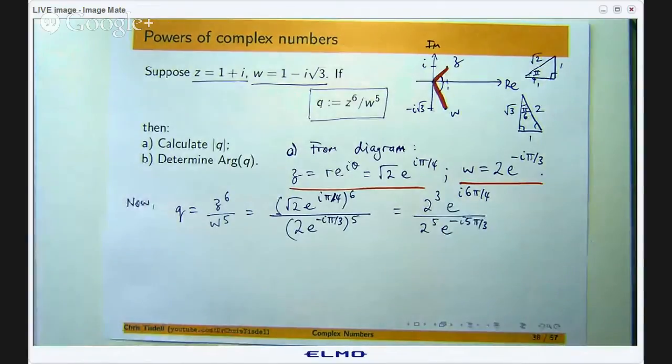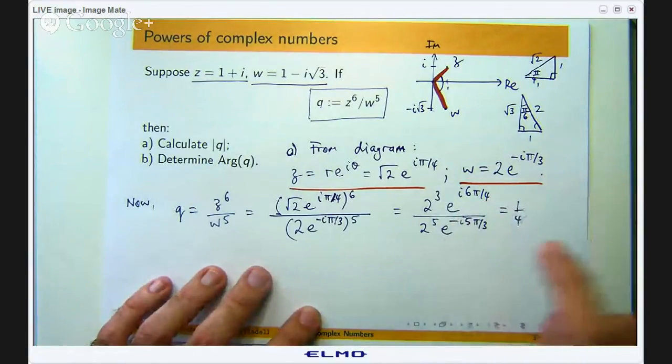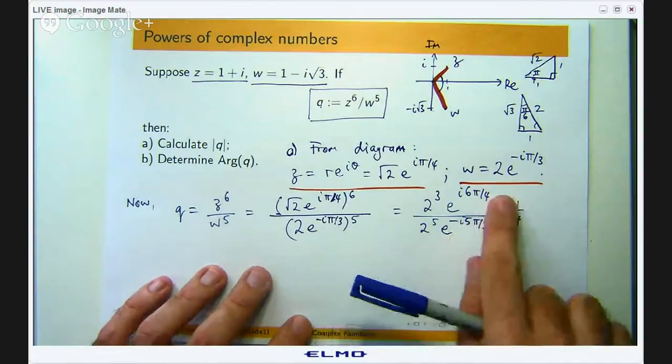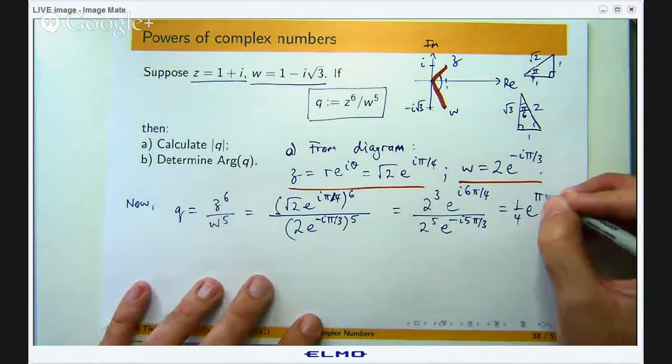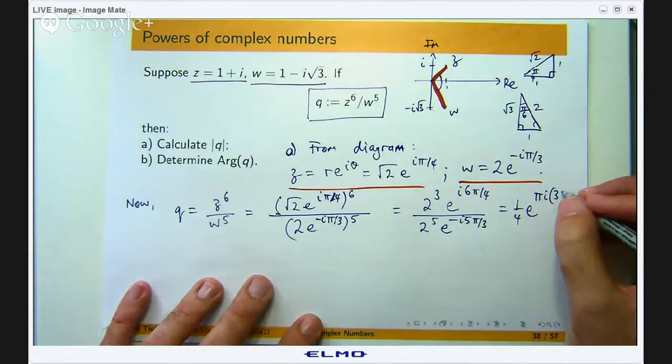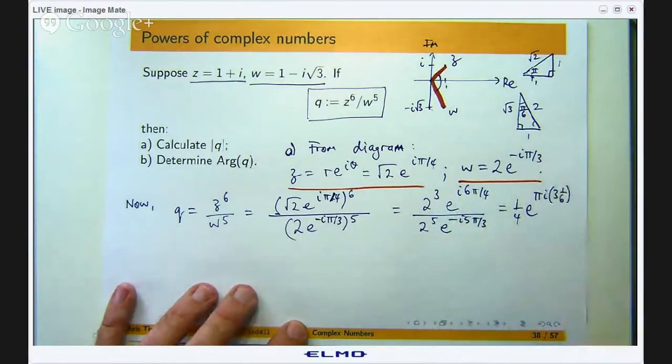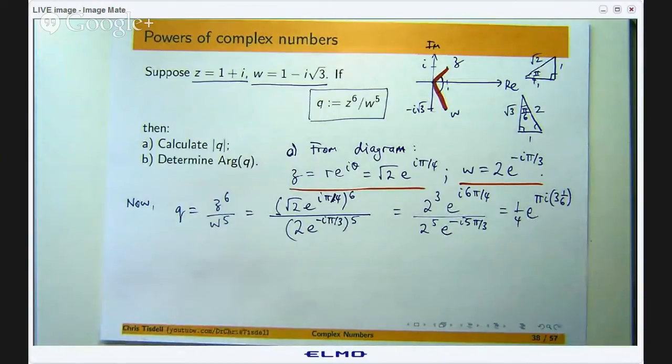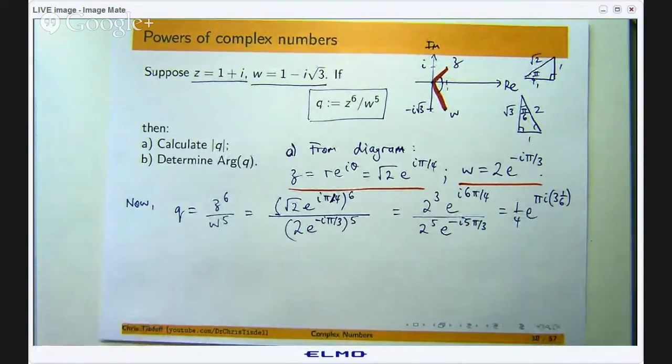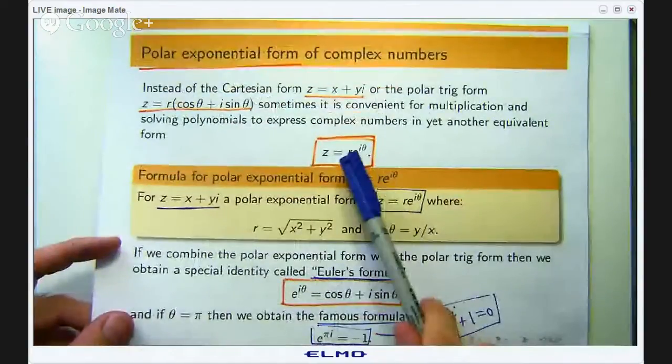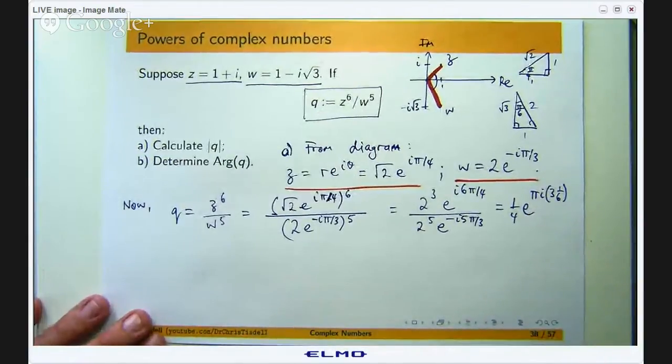What we want to do is simplify this. The 2's will cancel and you will get 2 squared on the bottom which is going to be 4. You can use the power laws or the index laws to bring that up to the top and then simplify. We are going to get e to the i times 3π on 6. Without doing anything more to this I can immediately solve part a because this number in the polar exponential form denotes a length or a modulus. So the modulus of q is going to be ¼.